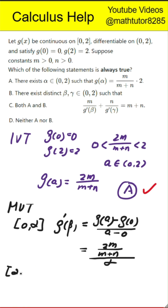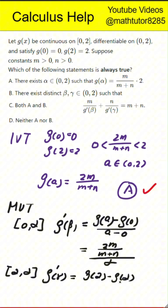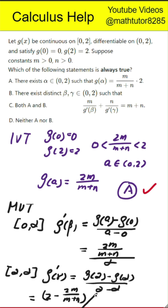On the interval from alpha to 2, there exists a point gamma such that g prime of gamma equals g of 2 minus g of alpha, all divided by 2 minus alpha. That becomes 2 minus 2m divided by m plus n, then divided by 2 minus alpha.